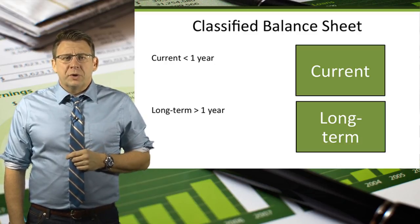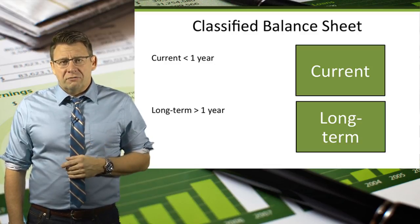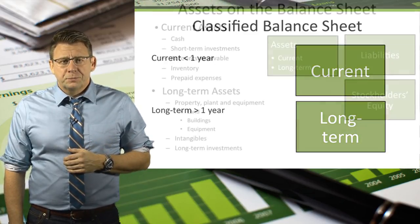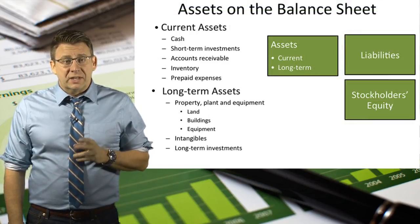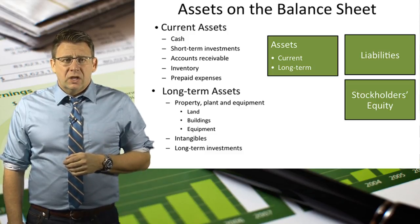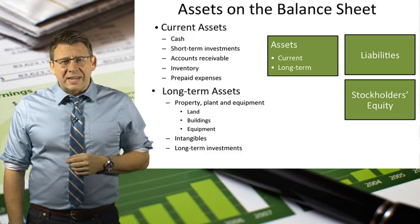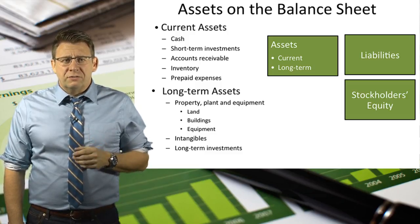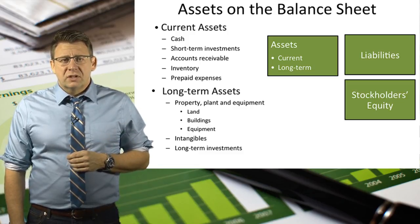The easiest way to remember if something is current or long term is the one-year cutoff. Less than one year is current; more than one year is long term. Current assets are those assets that will be collected in cash or used up in one year or less. You can see some common examples on the slide. Long-term assets are those assets that are expected to provide value into the future more than one year, and you can see some common examples of those on the slide.